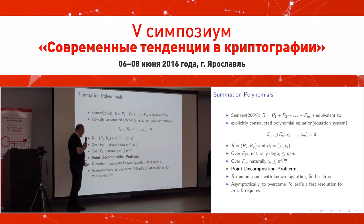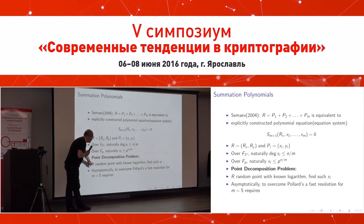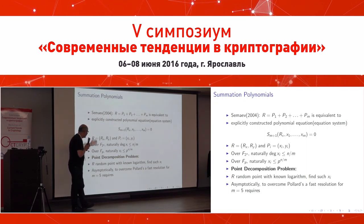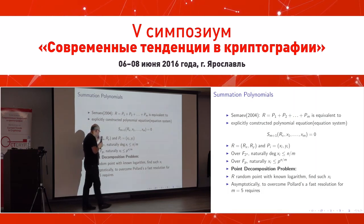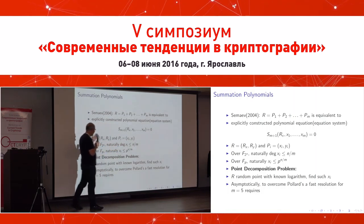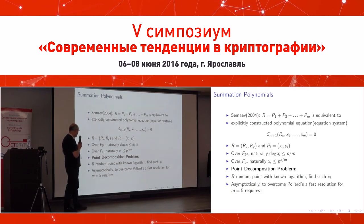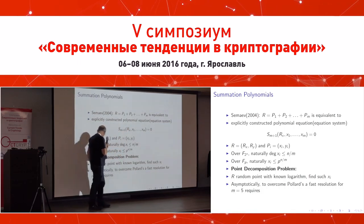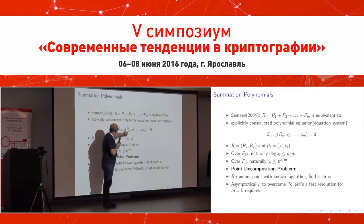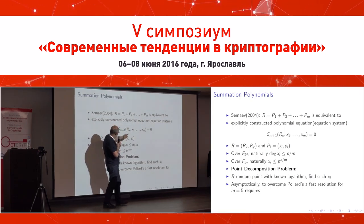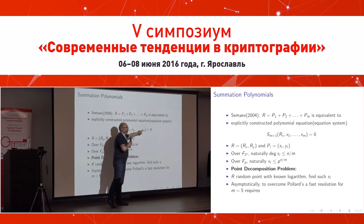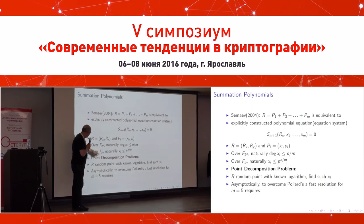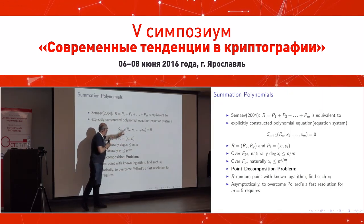We can now formulate the point decomposition problem: given a random point R with a known or partially-known logarithm, substitute the x-coordinate of R into the summation polynomial and find x1, ..., xM from the appropriate bounded set — either polynomials of bounded degree in characteristic 2, or integers bounded by p^(n/m) in a prime field.